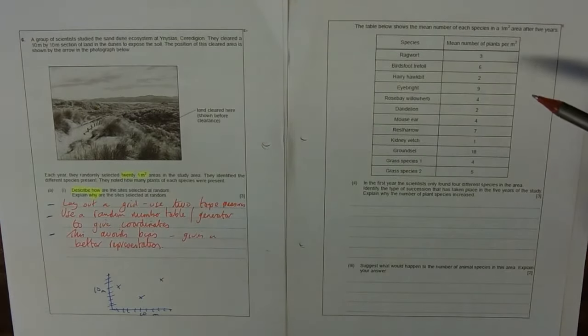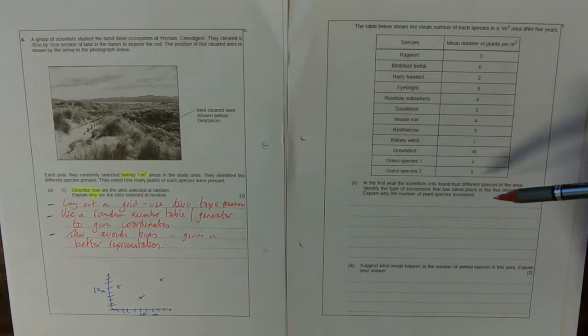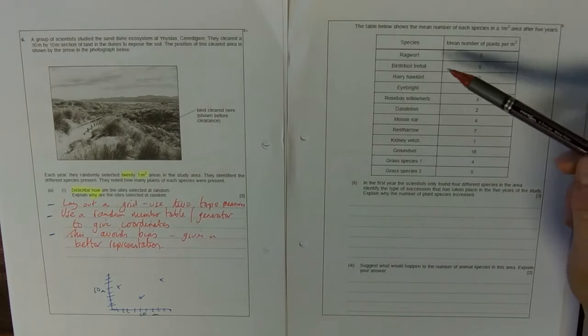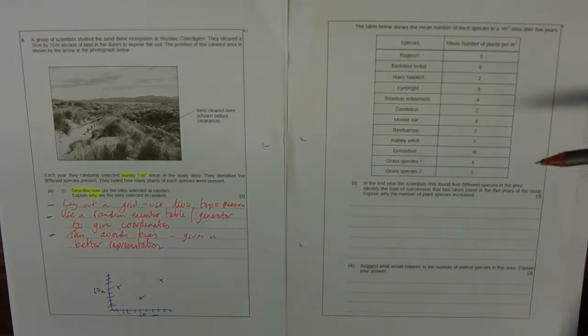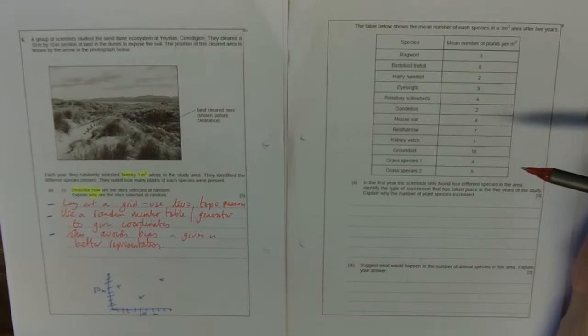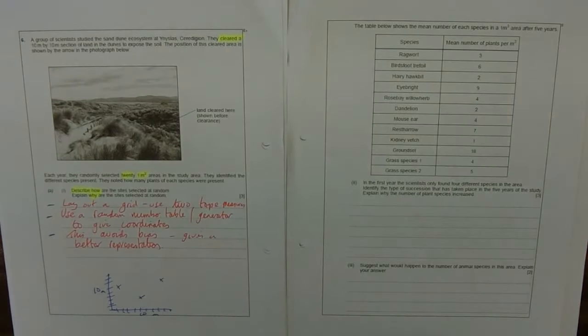And then we've got the data table of the mean number of species. Lots of things you might not have heard of there. In the first year, the scientists only found four. They found a lot more after five years. Identify the type of succession. Well, you've got the type of succession that goes from bare rock to the climax community. That's a primary succession. Here they haven't done that. What have they done? They've cleared an area.